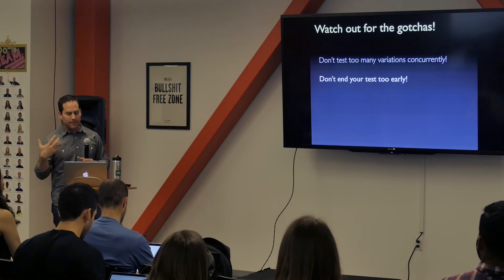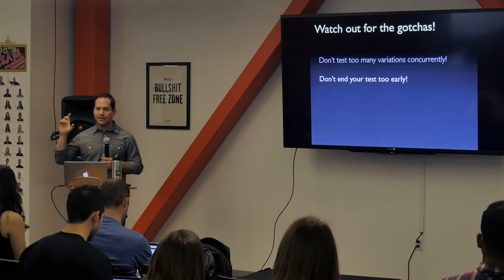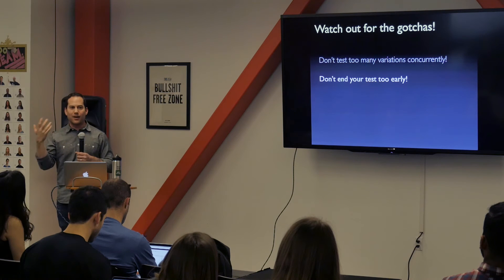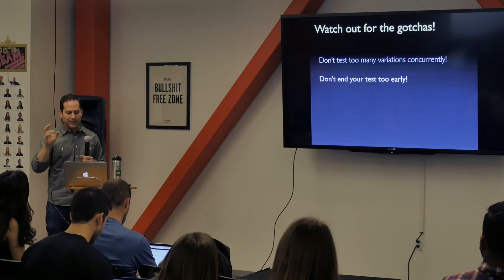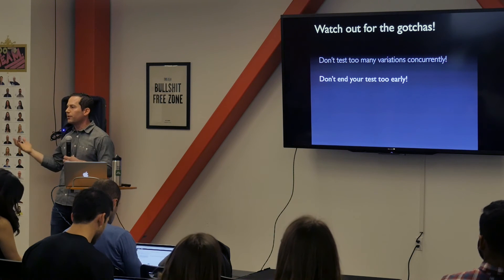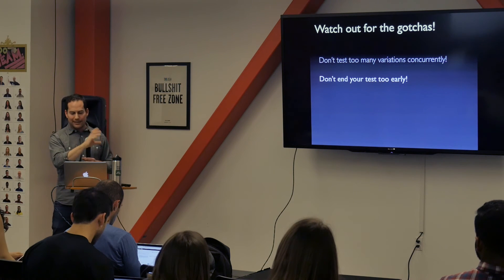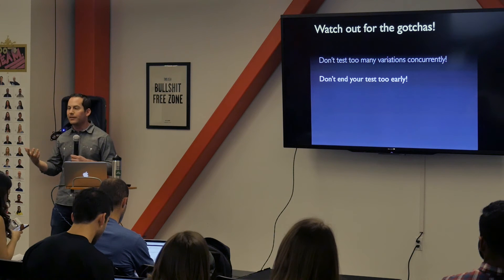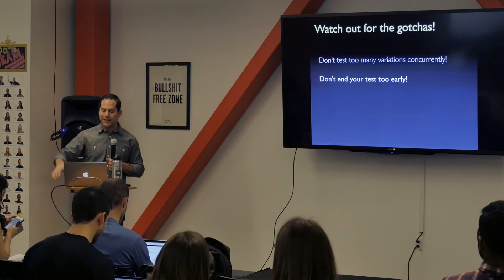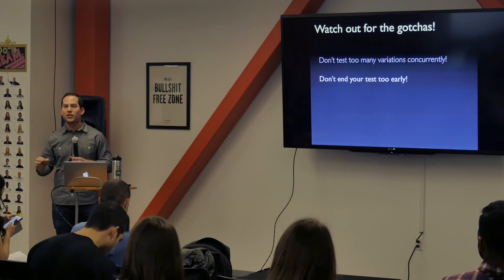Don't end your test too early — this is a huge frustration of mine. Most big platforms and email service providers have statistical significance calculators built in, and most of them are not reliable. They always call the test too soon. Watch out for A/B testing tools calling it early, and always try to double-check the numbers in a third-party statistical significance calculator. The worst thing you can do is have confidence in data that's inaccurate or not statistically significant. Take the statistical significance calculators on these platforms with a huge grain of salt.